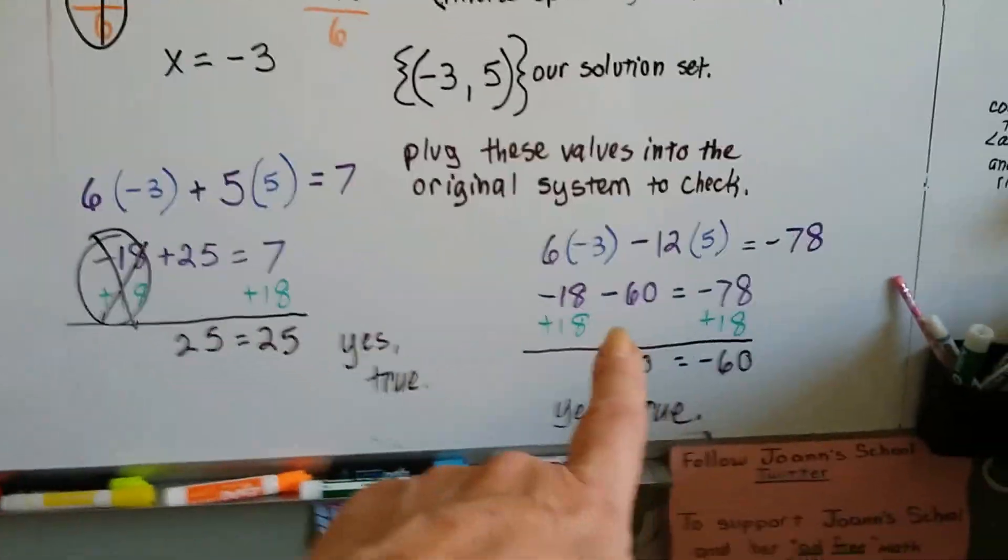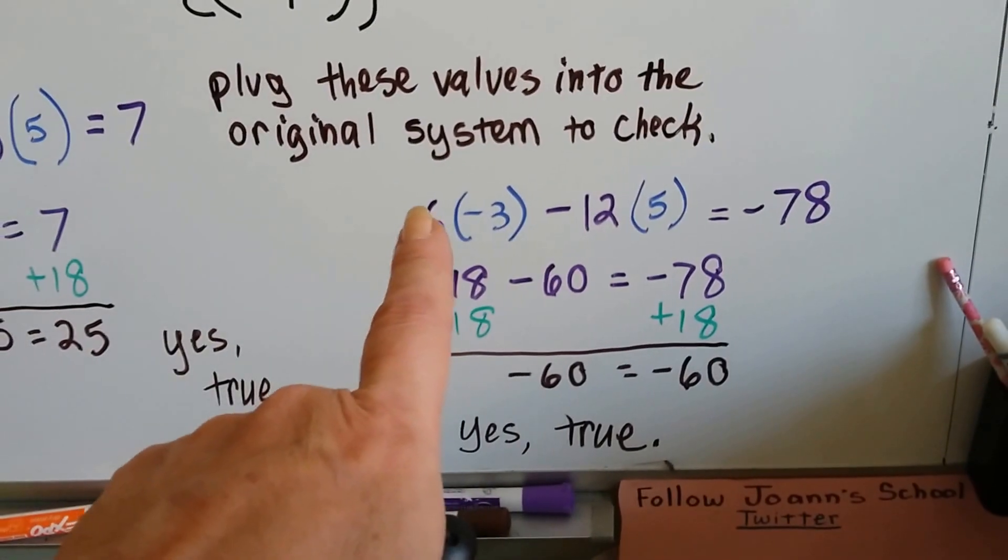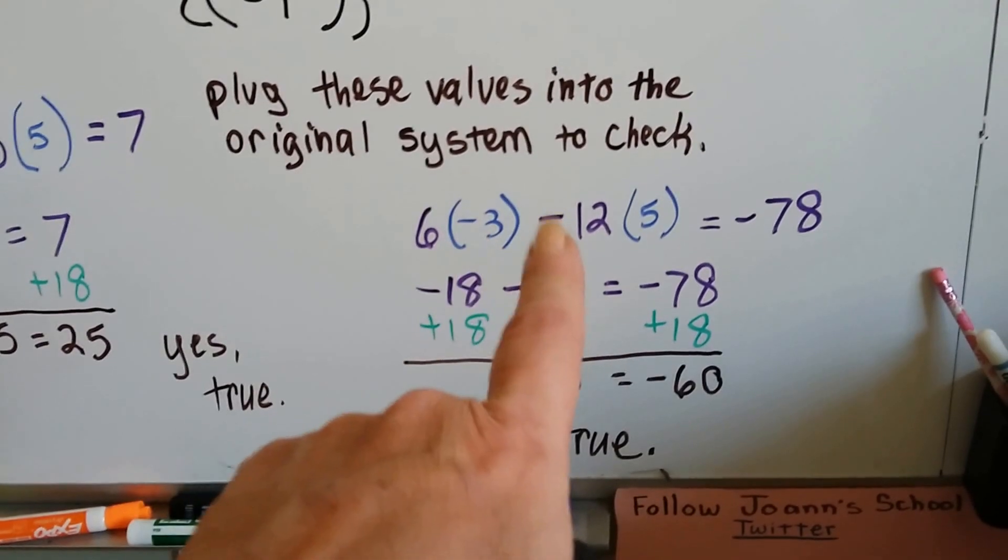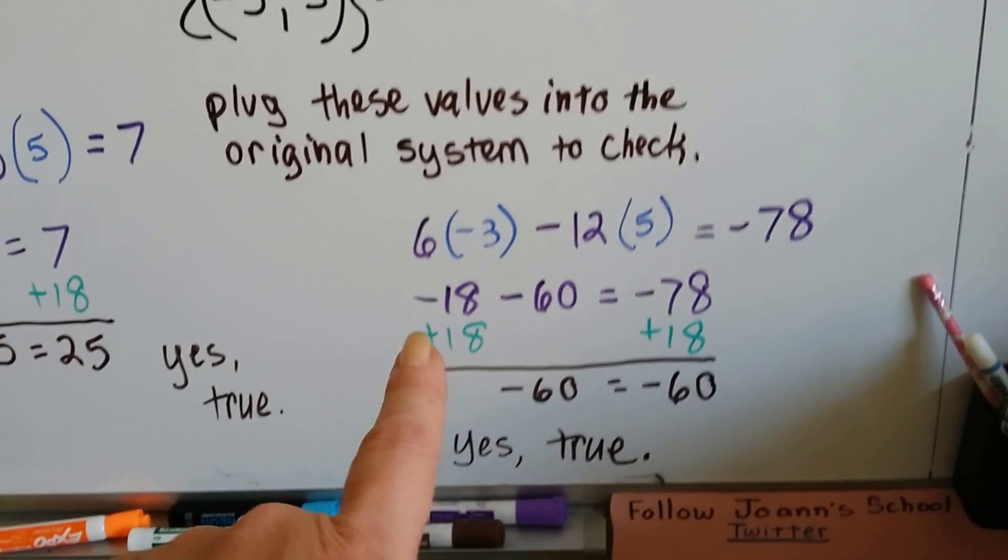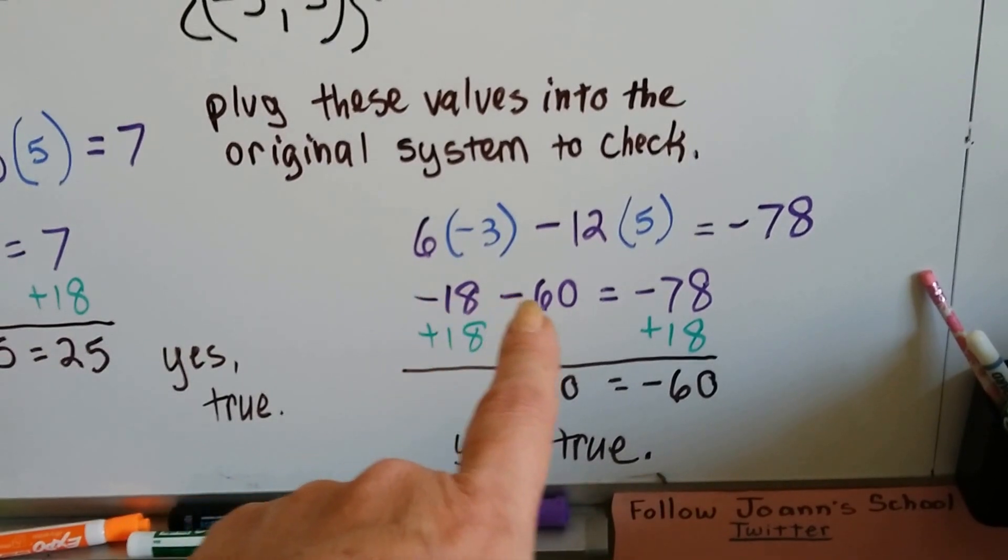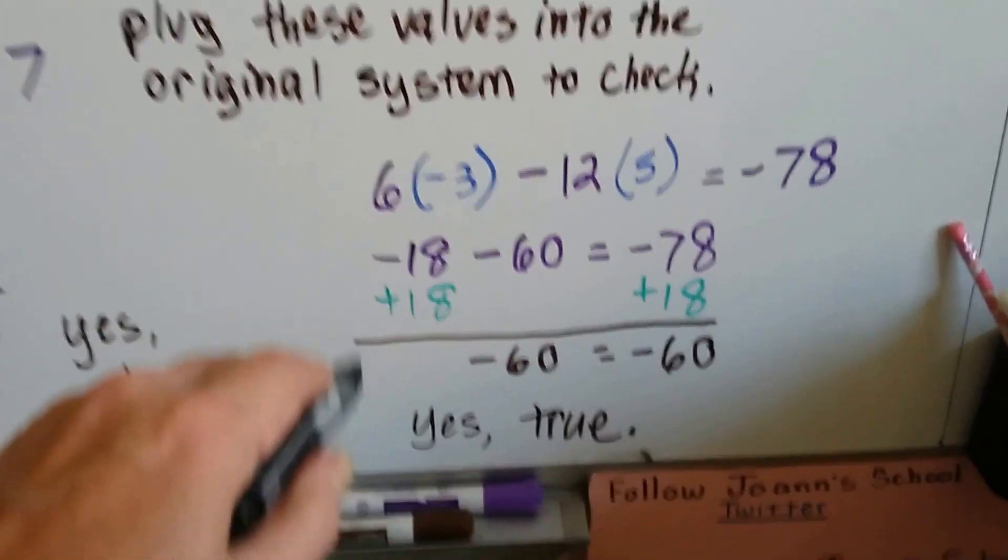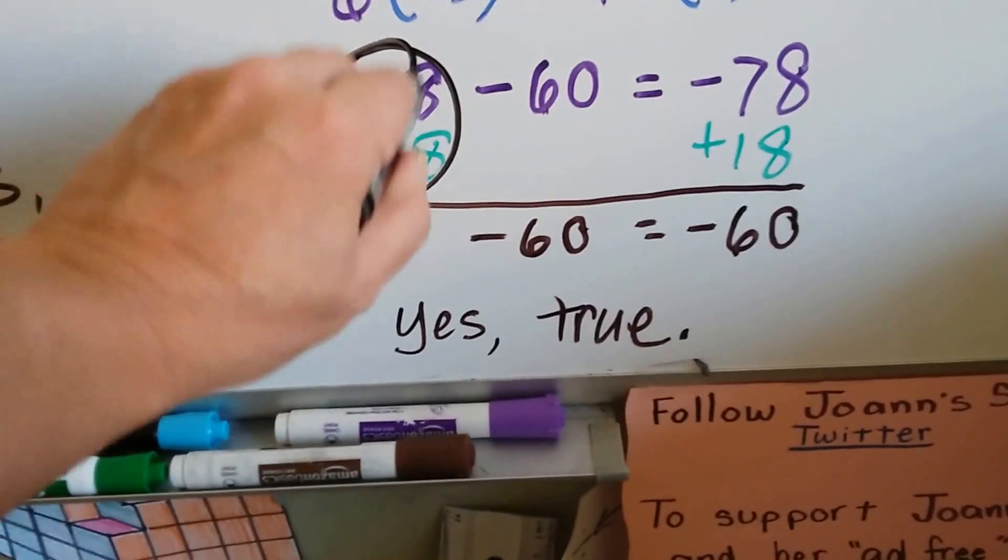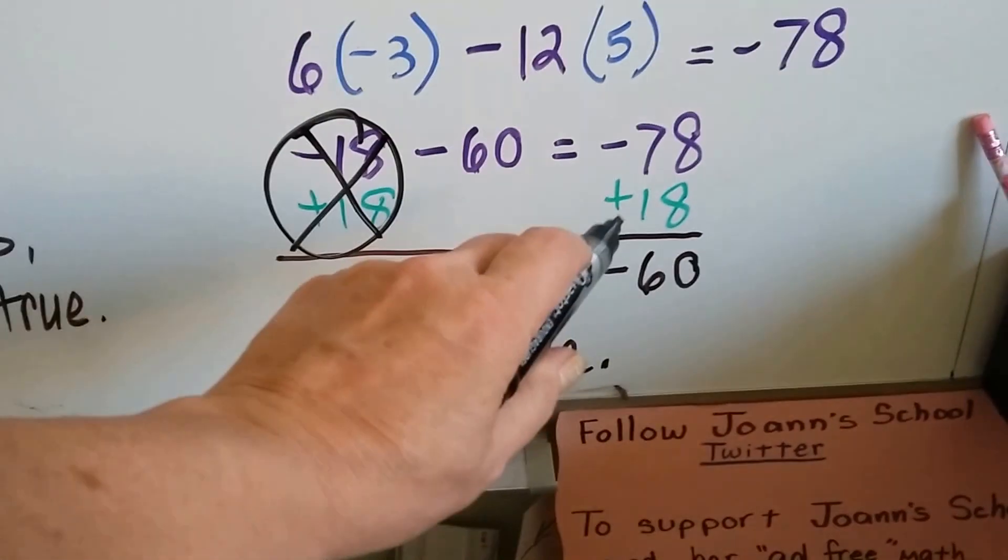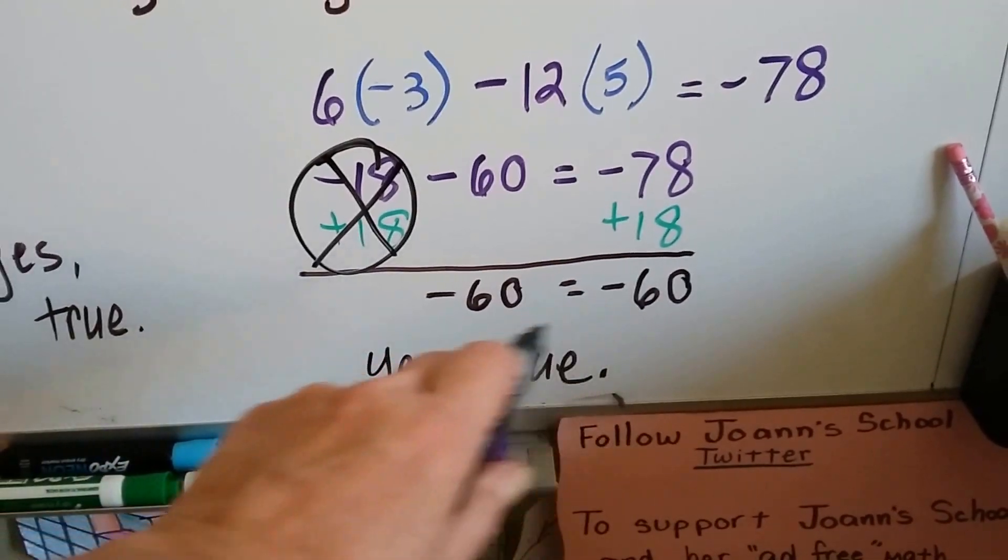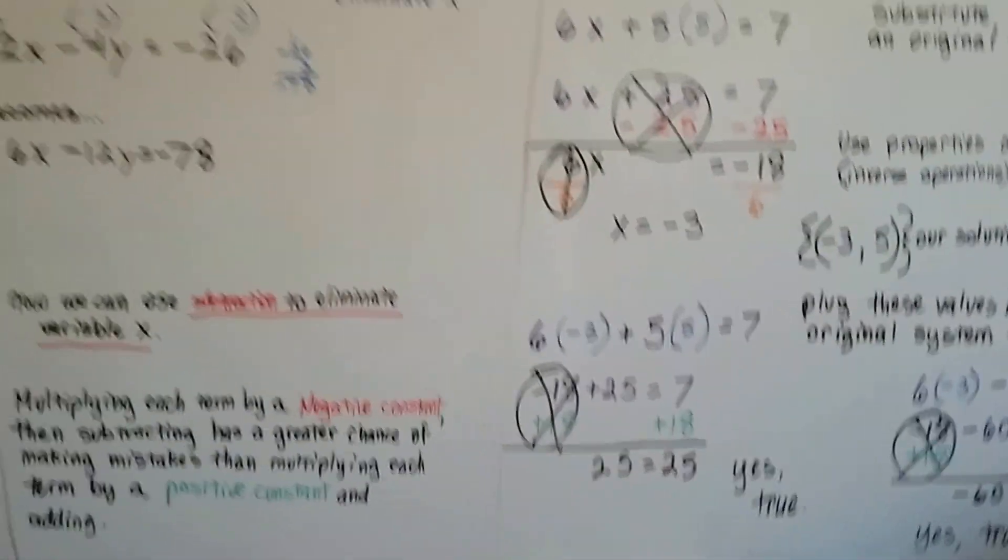So now let's plug it into the other equation, because we want to do it to the entire system to make sure we got it right. So now we've got 6 times negative 3 minus 12 times 5 equals negative 78. That gives us a negative 18 minus 60 equals negative 78. We add the 18 to each side. We create a zero pair. And this negative 78 plus 18 gives us a negative 60. We've got negative 60 equals negative 60. And that's true. So we know we did it correctly.